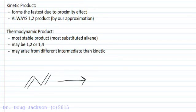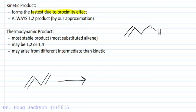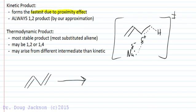Let's review the reactivity of dienes in acid additions pertaining to kinetic product and thermodynamic product. The kinetic product is going to be the fastest product to form due to the proximity effect. As we add our proton and form a delta plus on this carbon in a Markovnikov addition, a nucleophile with a minus charge is going to be associating with this position before the bonds completely break. This is a transition state effect, before resonance can fully develop, so the delta plus is not as defined on this carbon as it is on the two position.